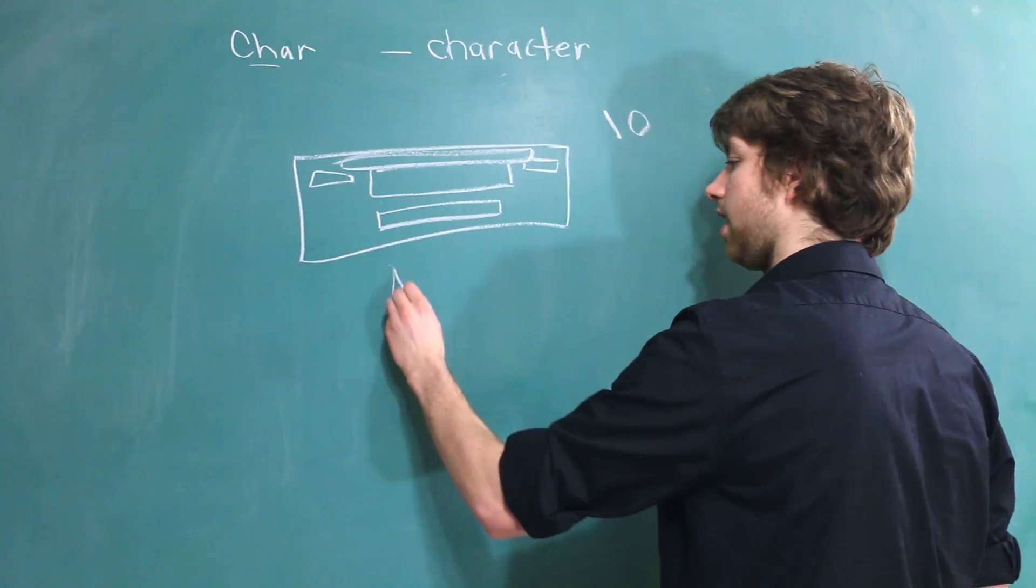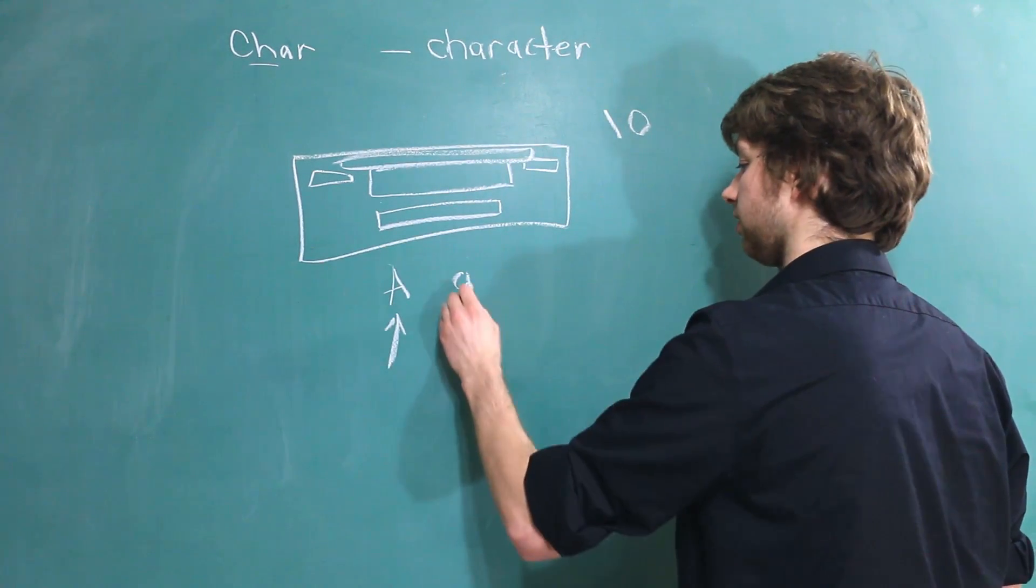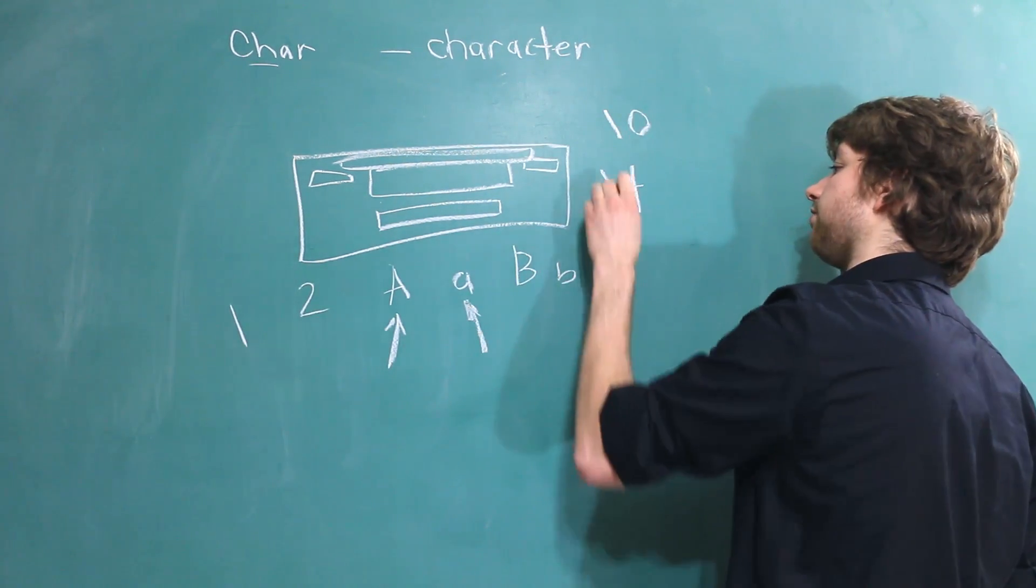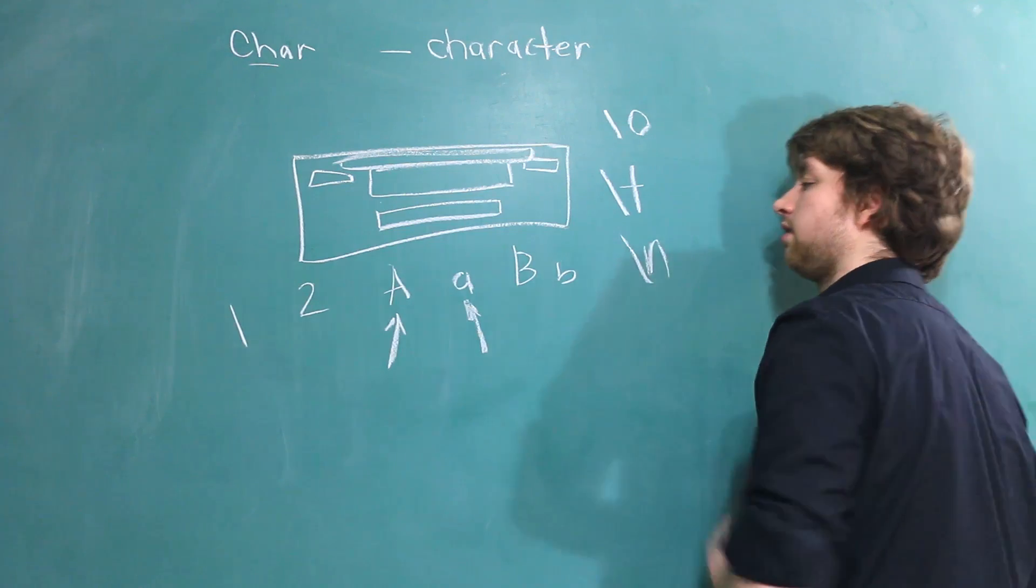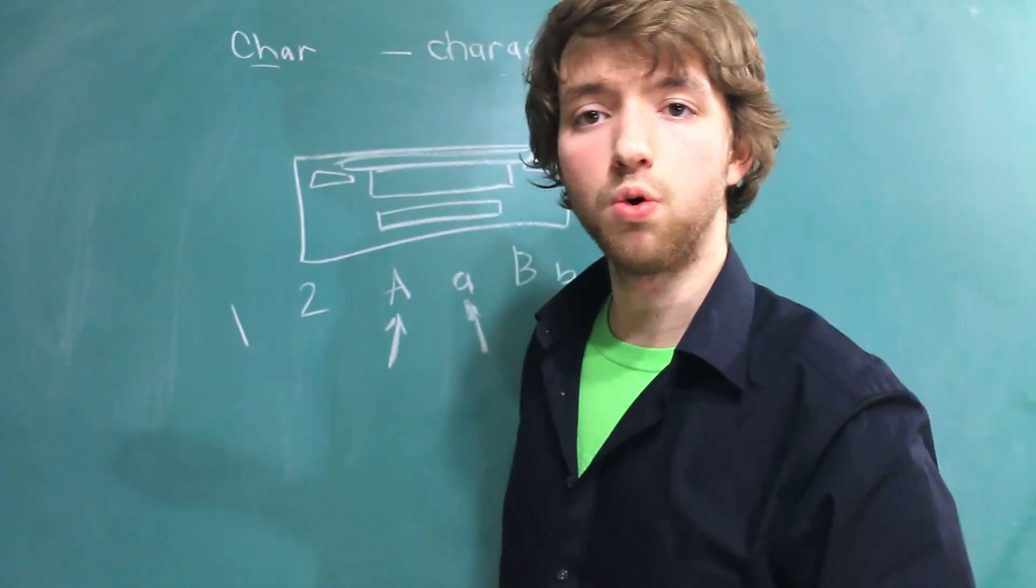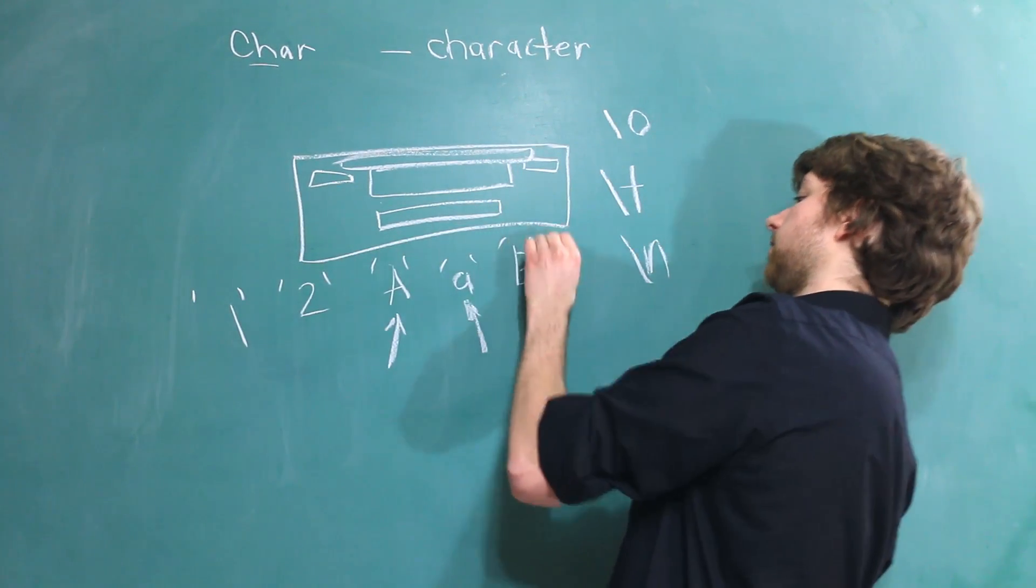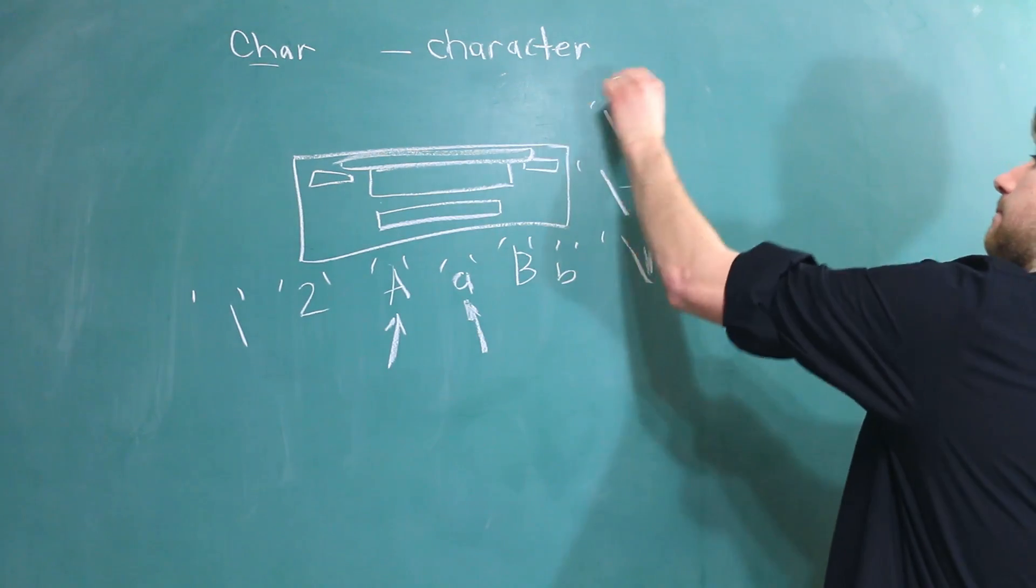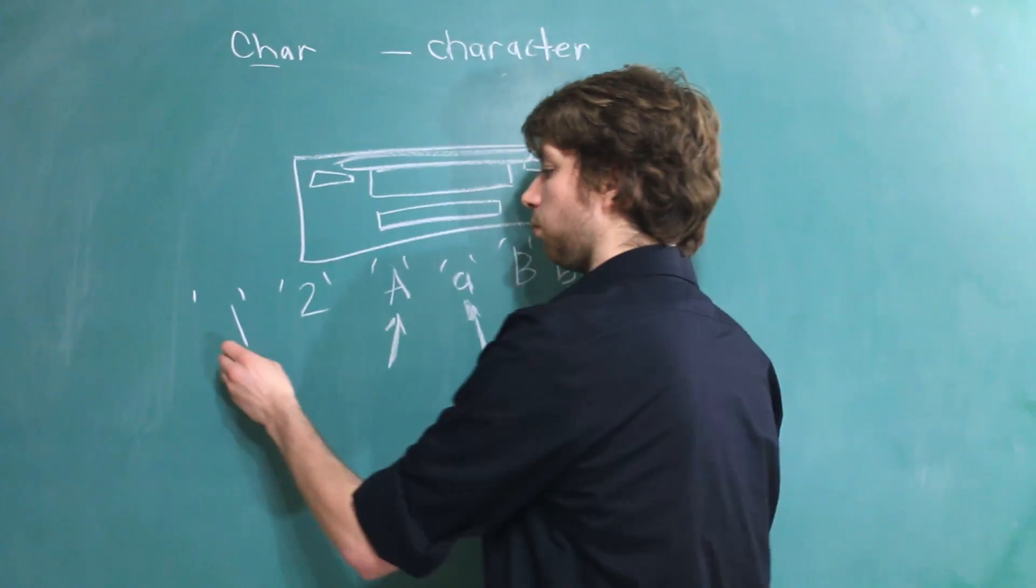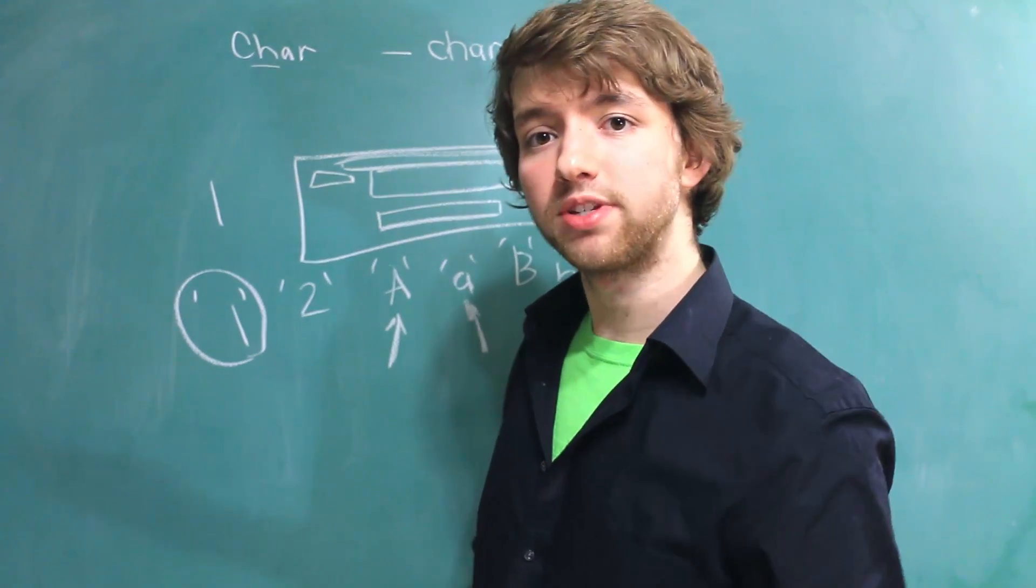So, examples of characters would be A, a, which by the way, these are not the same character, B, b, 1, 2, backslash T for tab, backslash N. And when you're writing characters in a program, you will always use single quotes to surround them. That establishes the difference between one as a character and one as a number. They are two separate things.